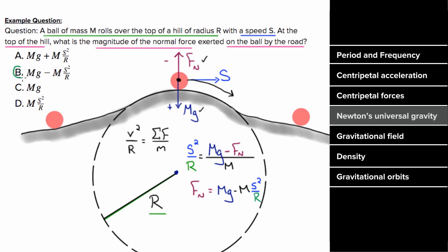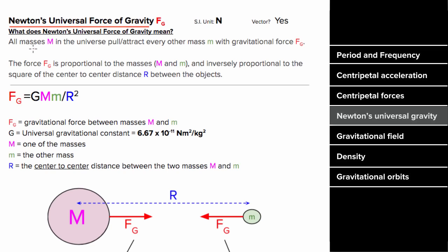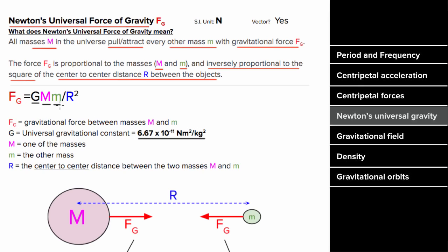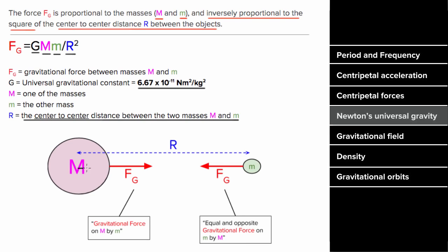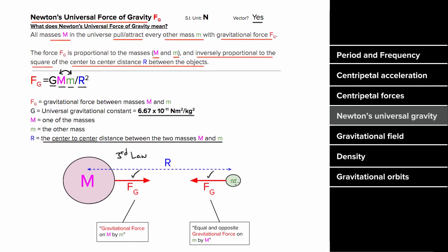Newton's universal law of gravity states that all masses in the universe attract every other mass with a gravitational force. This force is proportional to each mass and inversely proportional to the square of the center-to-center distance between the two masses. The formula is F = G × m₁ × m₂ / r², where G is 6.67 × 10⁻¹¹. Even if the two objects have different masses, the magnitude of the force they exert on each other is the same, consistent with Newton's third law. The unit is newtons, and the direction always attracts.